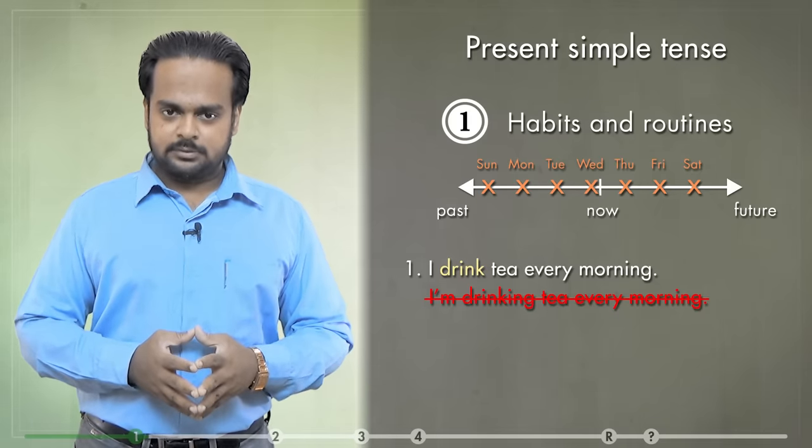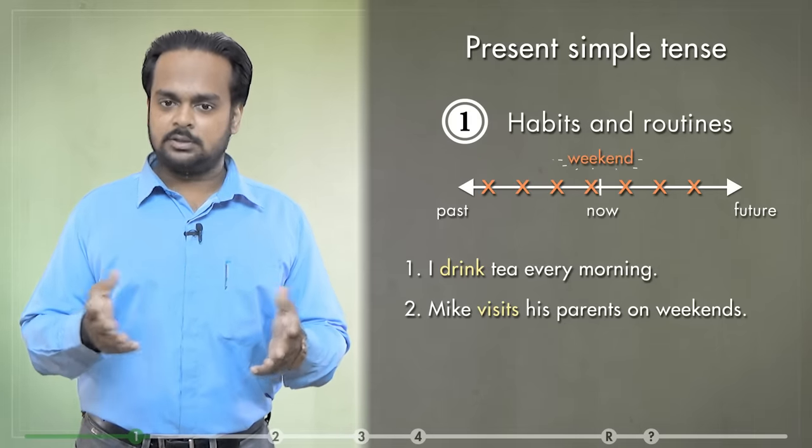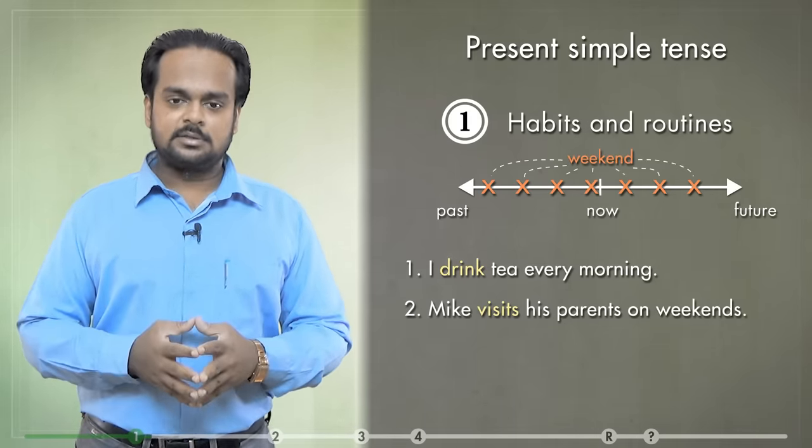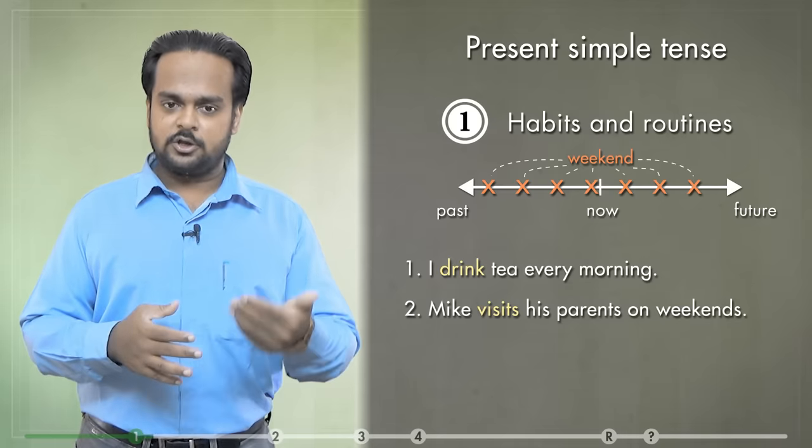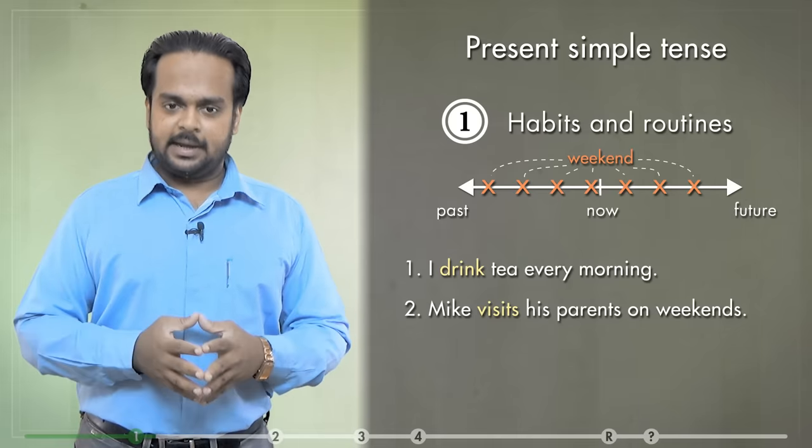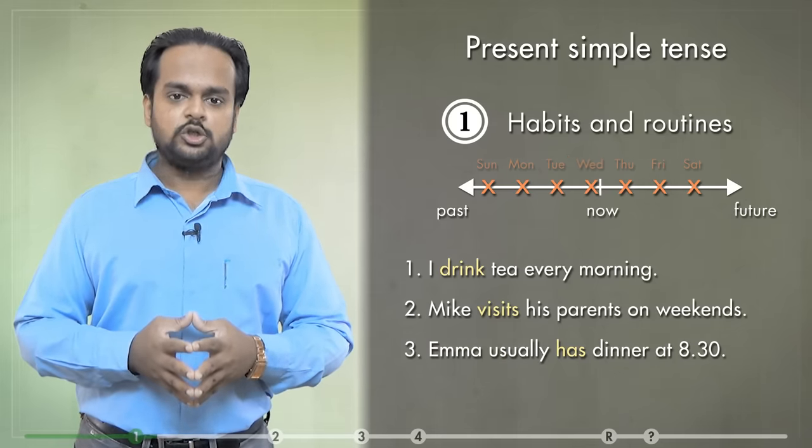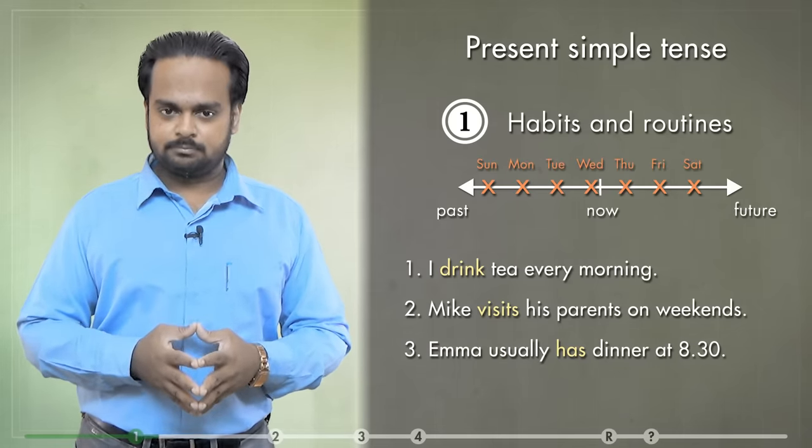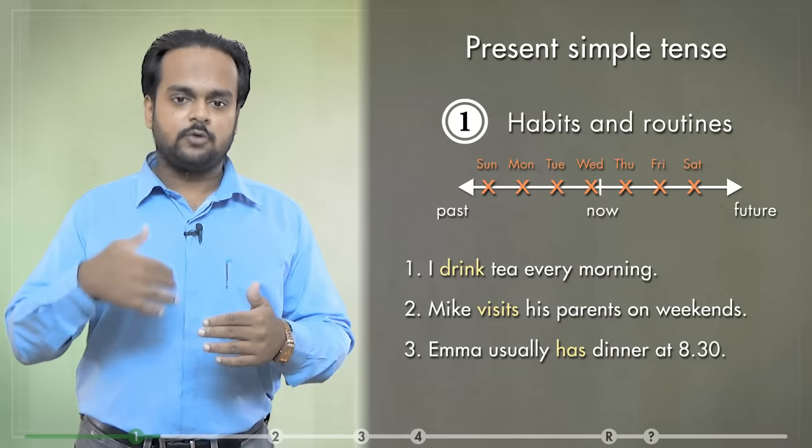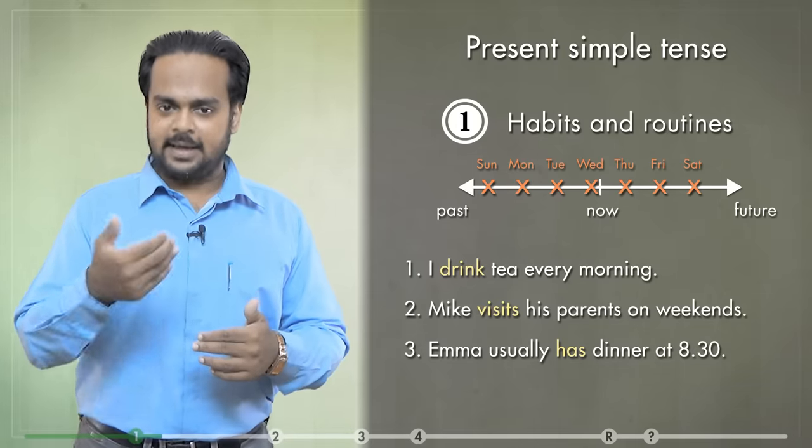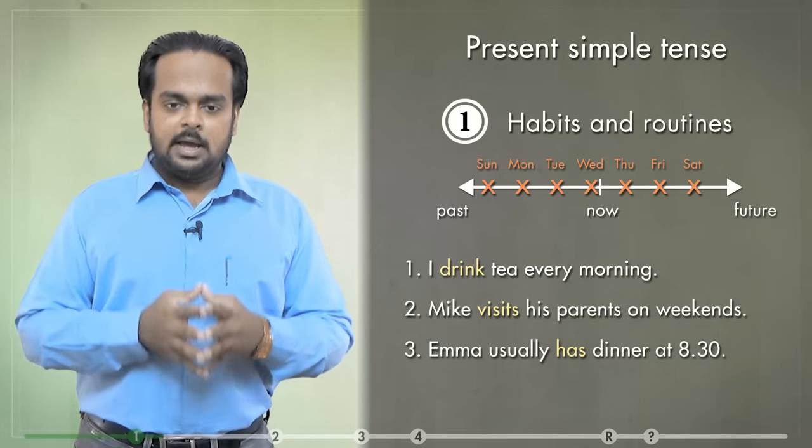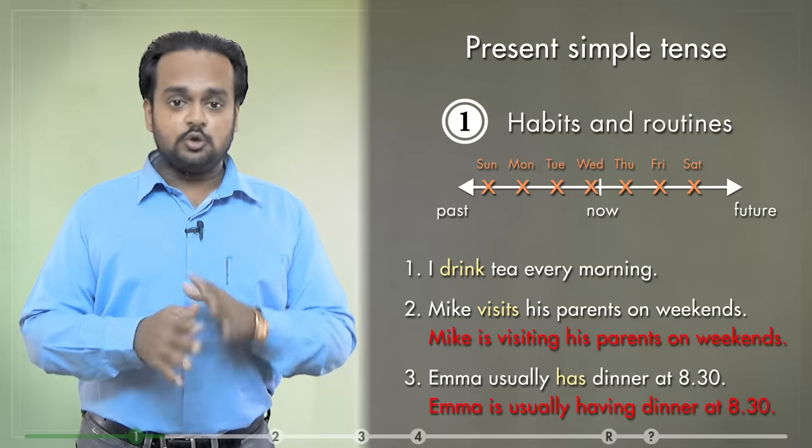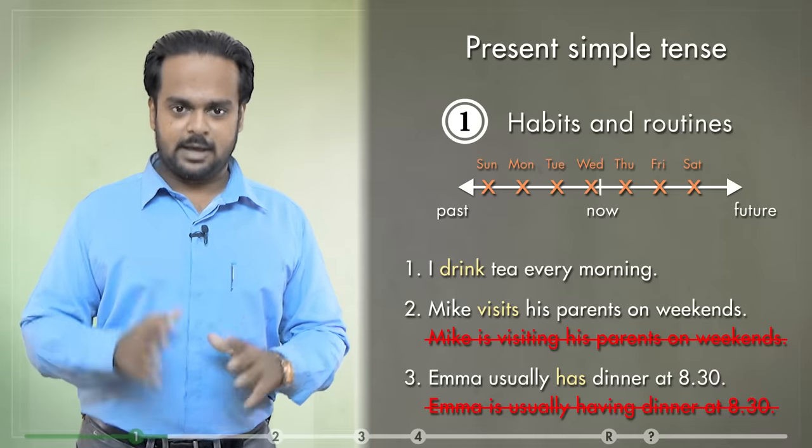Now, it would be wrong to say I'm drinking tea every morning. Because this is a habit and for habits, you must use the present simple tense. Alright, here are some more examples. Mike visits his parents on weekends. Again, this is something that Mike does regularly, every weekend. In our next example, Emma usually has dinner at 8.30. Meaning that it's part of her routine to eat dinner at 8.30 every day. In both of these sentences, you should not use the continuous form. Remember that.